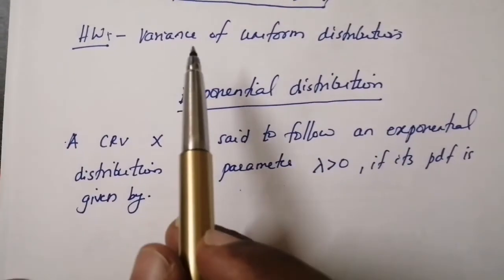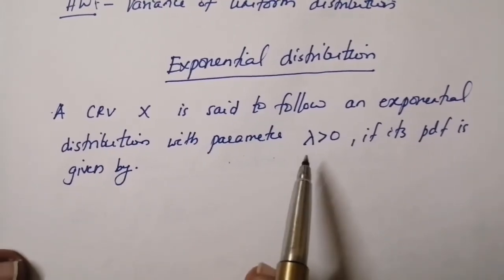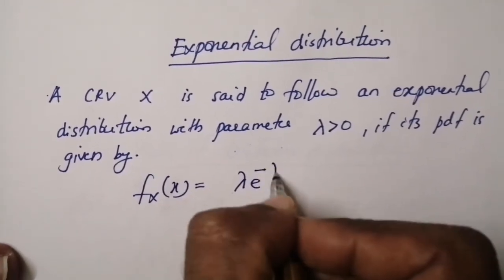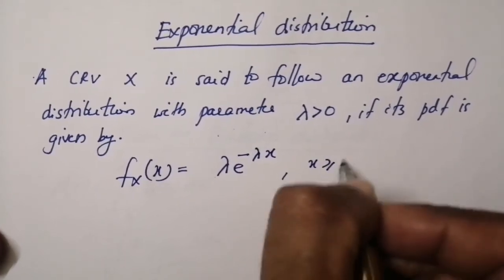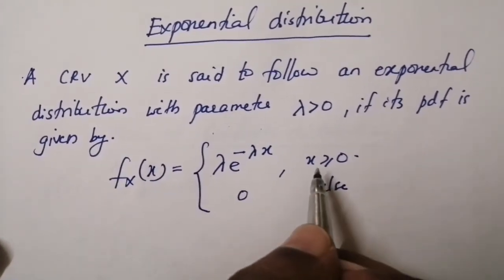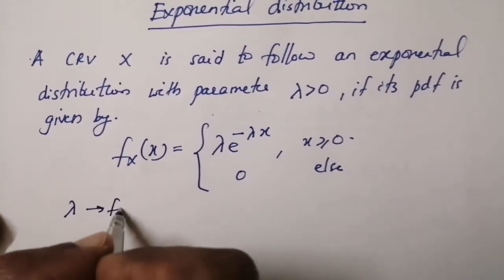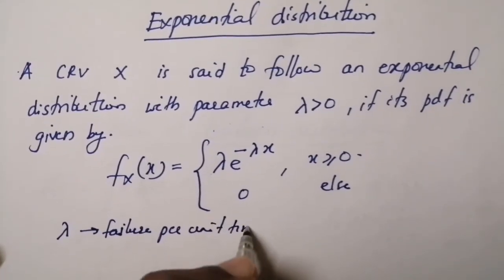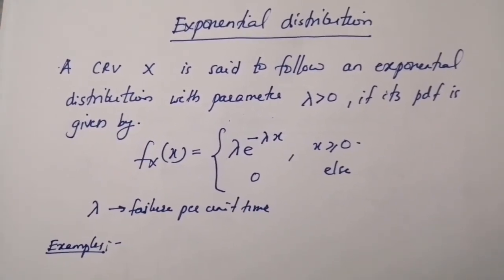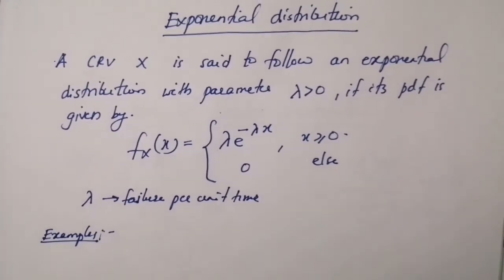Find the variance of uniform distribution as a homework. Now, for exponential distribution: a continuous random variable X is said to follow an exponential distribution with parameter λ > 0 if its PDF is f_X(x) = λ·e^(−λx) for x ≥ 0, and 0 elsewhere. So exponential distribution is defined for non-negative random variables, and the parameter λ represents failures per unit time. Applications include: signal strength fluctuations received by radar receivers from certain targets are exponentially distributed, and raindrop size from large numbers of rainstorm measurements is also exponentially distributed.